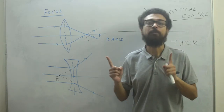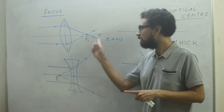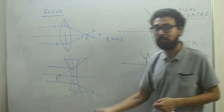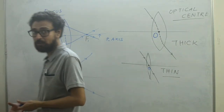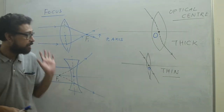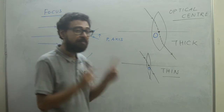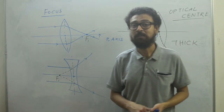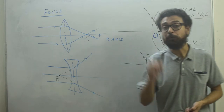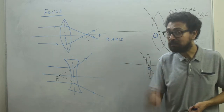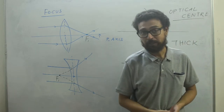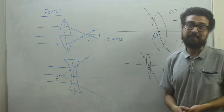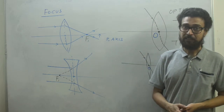We have two foci — one on each side. One is called the principal focus and the other is called the secondary focus. These are F1 and F2. The definitions of focus for convex and concave lenses usually appear in ICSE and CBSE board exams, so be careful to learn these definitions.